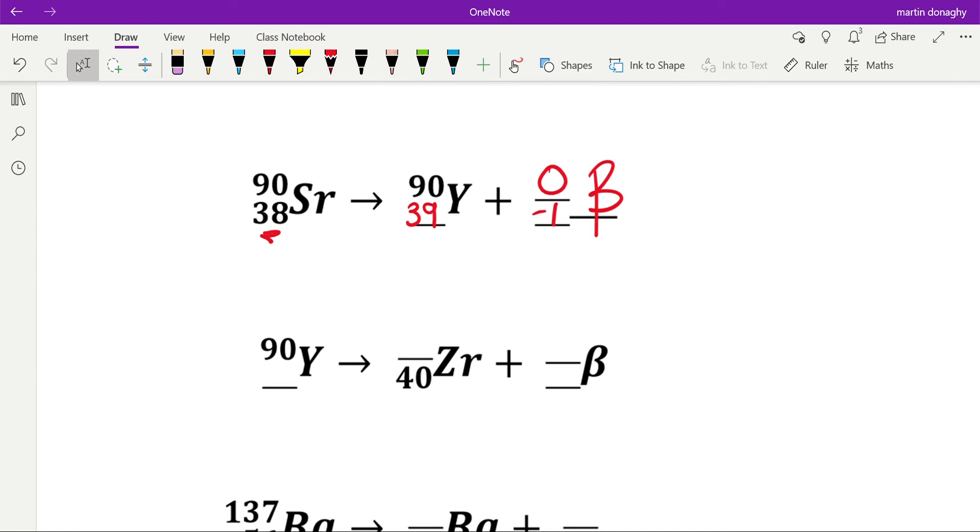Next one, we're told that it emits beta. So this is zero, this is minus 1, which means this must be 90. Which means this bottom number, 40 minus 1, is 39. We should know that anyway because it's yttrium from above—it must have the same atomic number. The mass numbers can be different because there are different isotopes.